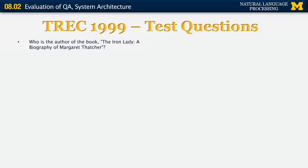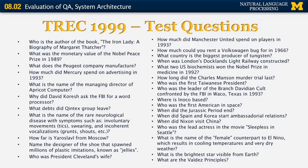Some additional test questions: 'Who is the author of the book The Iron Lady, A Biography of Margaret Thatcher?', 'What was the monetary value of the Nobel Peace Prize in 1989?', and so on. The entire corpus is available from the TREC website at nist.gov. If you're interested in doing research and evaluating your system against that corpus, you can download it from there.